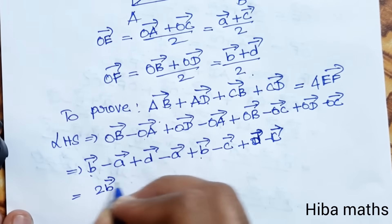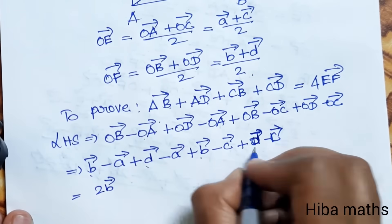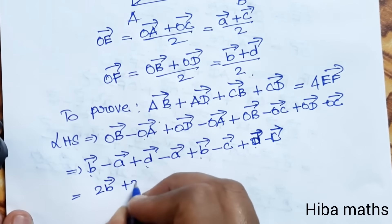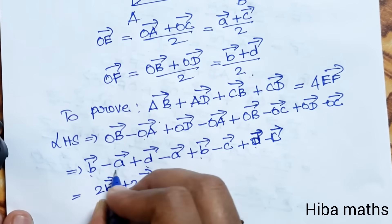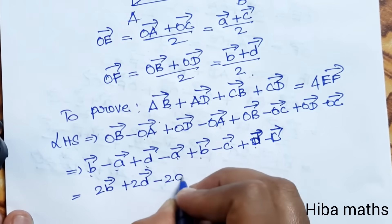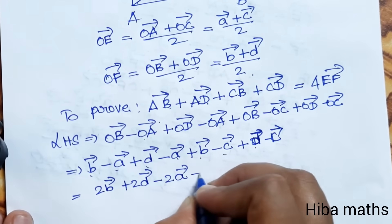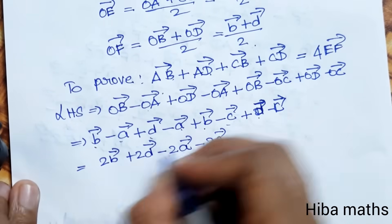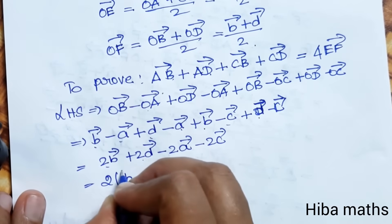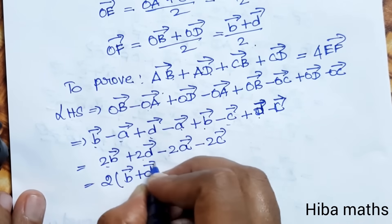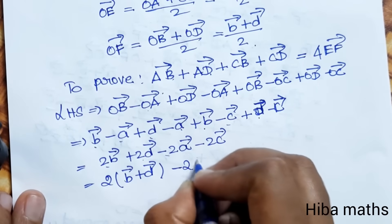This gives us B vector minus A vector plus D vector minus A vector plus B vector minus C vector plus D vector minus C vector. We see B vector appears twice, D vector twice, minus A twice, minus C twice.